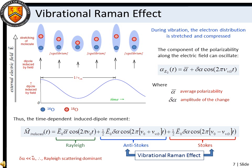The vibrational Raman effect is analogous to the rotational Raman effect. In this case, the molecular electron distribution is stretched and compressed during vibration, so the component of the molecular polarizability along the electric field can oscillate. Thus, the oscillating induced dipole moment has components at the incident light frequency and at the molecular vibration sum and difference frequencies.